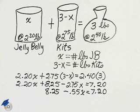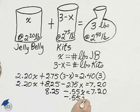If I subtract $8.25 from $7.20, I have minus $0.55X equals $7.20.